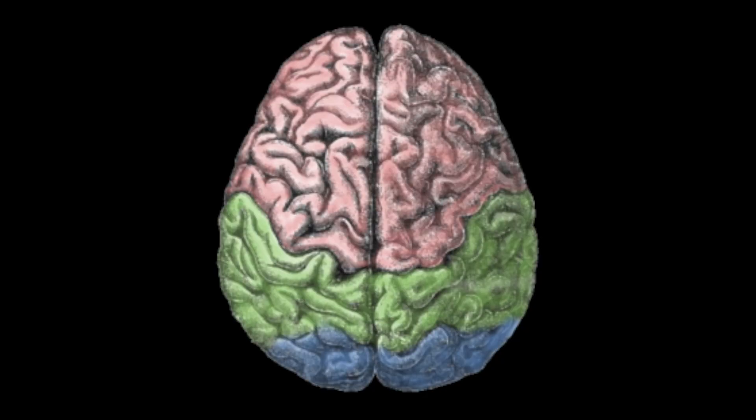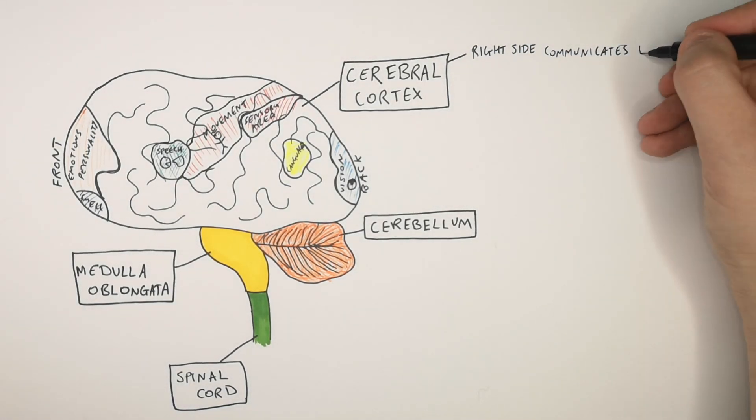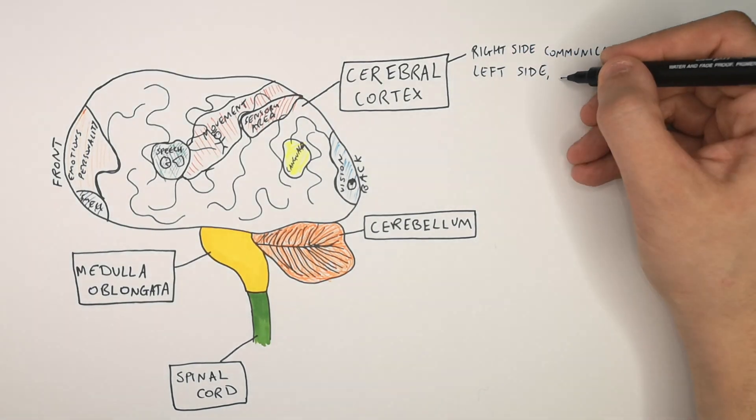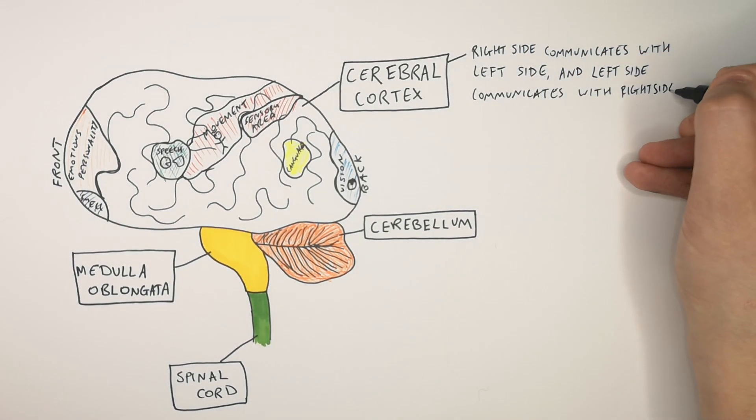There are two hemispheres to our cerebral cortex, the right and the left hemispheres. So you've got a right side and a left side. So the right side of our cerebral cortex communicates with the left side of our body, and the left side of our cerebral cortex communicates with the right side of our body.